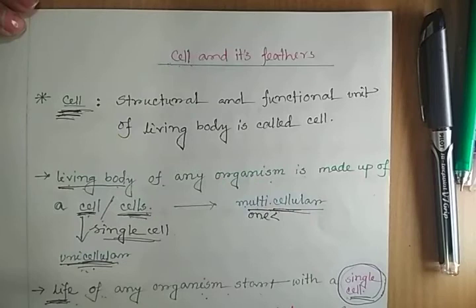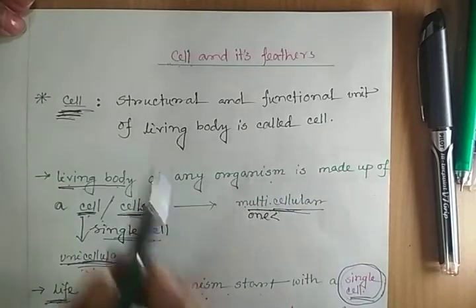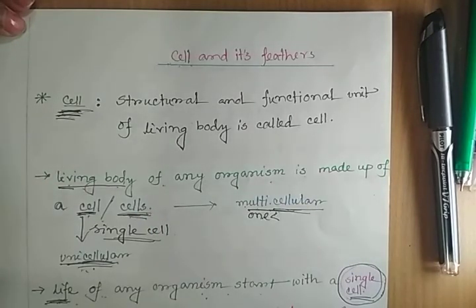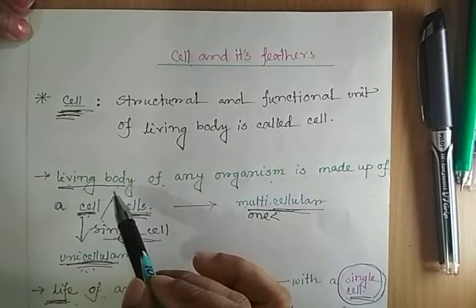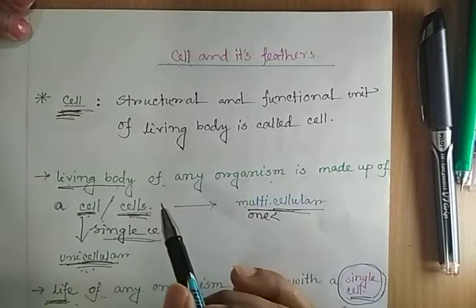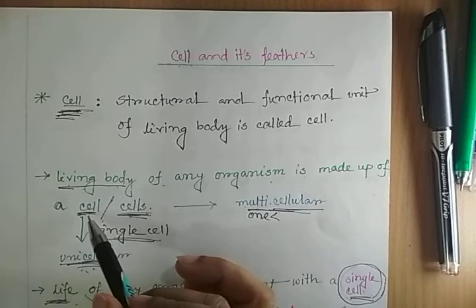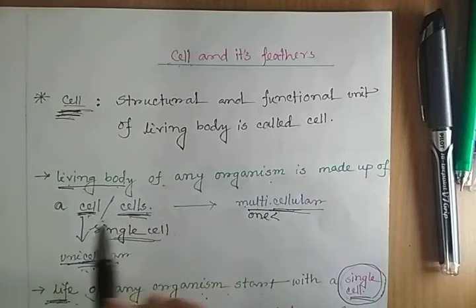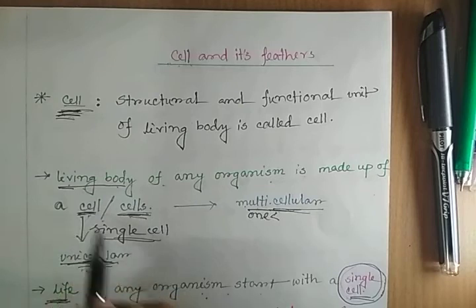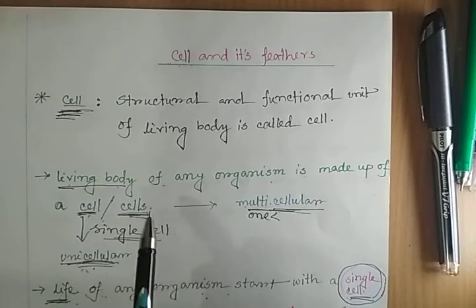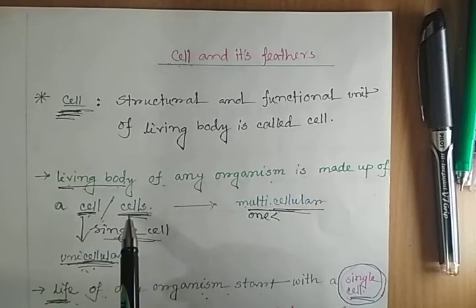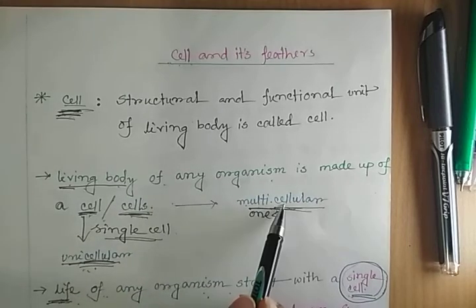First of all, we need to know what is a cell. I think all of you are very well acquainted with the term cell. Cell is the structural and functional unit of an organism. The body of a living organism is made up of one cell or many cells. An organism with a single cell is called a unicellular organism; an organism with more than one cell is called a multicellular organism.